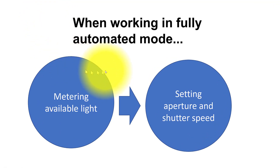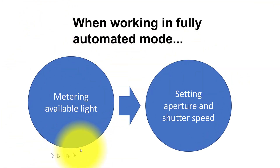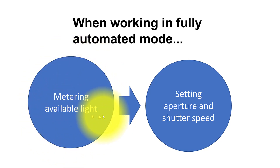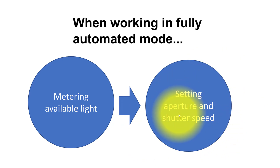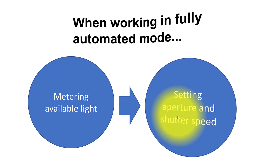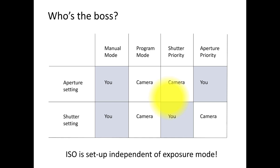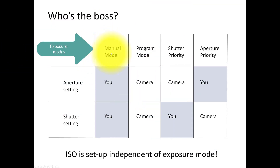When you're working in fully automated mode, there are two things that constantly work. Your Nikon D700 has a meter that keeps metering the available light, built into the camera. That meter feeds information about how much light there is into the camera, and the camera based on that calculates the correct aperture and shutter speed. You can take more or less control, and that's actually the whole point with having several exposure modes.